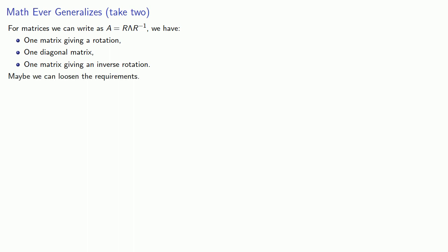Well, let's see what we can do about that. For matrices we can write as R λ R^(-1), we have one matrix giving a rotation, one diagonal matrix, and one matrix giving an inverse rotation. So if we want to try and generalize this, we can maybe loosen the requirements.